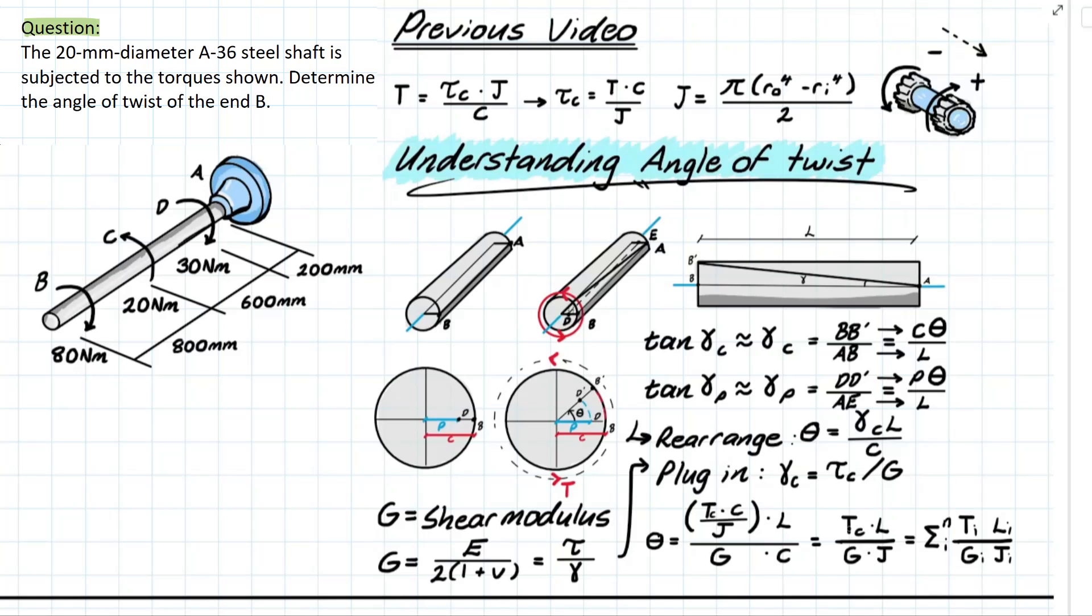Where you have the torque at c times the length of your member at the given point over the shearing modulus times the polar momentum of inertia.